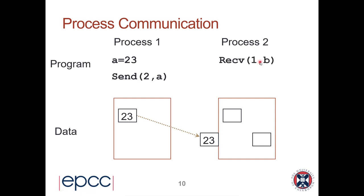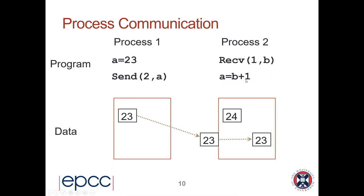The sending process has to actively call a send and the receiving process has to actively call a receive. Process two says: I want to receive some data from process one and put it into my variable B. Once the receive is issued, variable B on process two is set to 23, successfully transferring variable a from process one in Edinburgh to process two in Australia. Process two can then say a equals B plus one, setting its variable a to 24 — a completely different value from process one's variable a, which is 23.